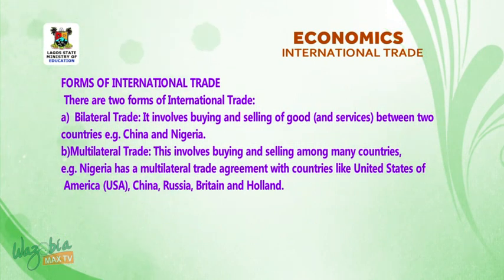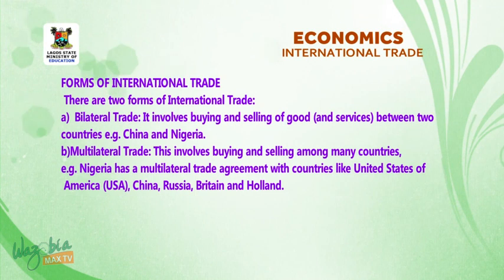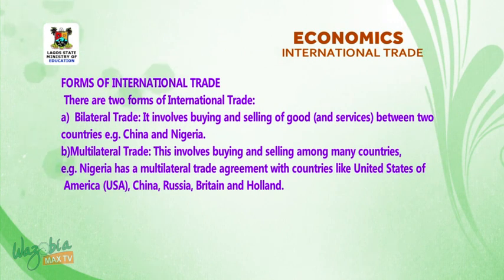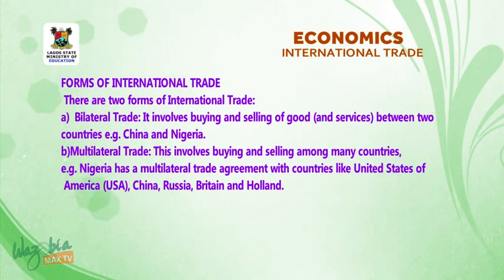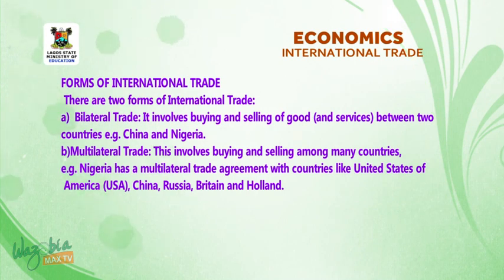There are two forms of international trade. 1. Bilateral trade — it involves buying and selling of goods between two countries, e.g. China and Nigeria. 2. Multilateral trade — this involves buying and selling among many countries. For example, Nigeria has multilateral trade agreements with countries like the United States of America, China, Russia, Britain, and Holland.